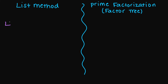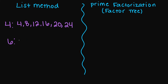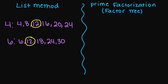So let's try four and six. I'm going to list the multiples of four — think of your multiplication timetable — so 4, 8, 12, 16, 20, and 24, and we'll stop here for now. For my six, we have 6, 12, 18, 24, and 30, and we'll stop here. The smallest common multiple that both of these numbers share is going to be the number 12. So your LCM is 12.